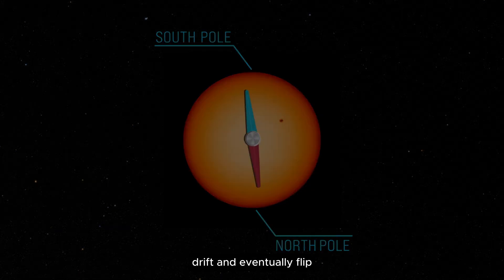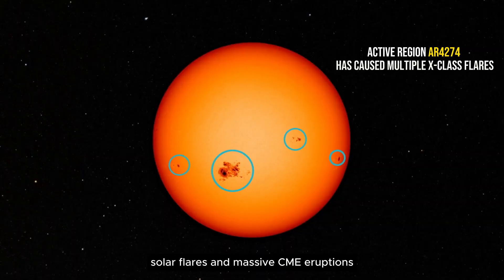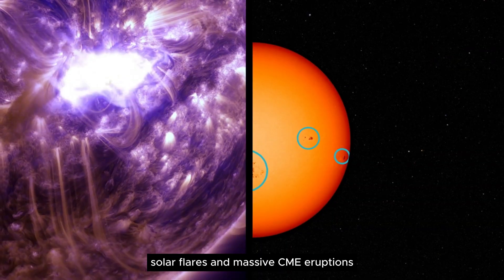drift, and eventually flip. That reversal drives everything. Sunspots, solar flares, and massive CME eruptions.